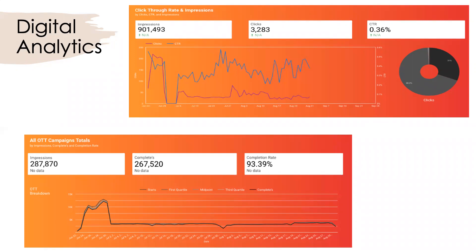With every digital campaign comes digital analytics — also called insights or dashboards. This is the information that shows your campaign results. At the top of this example are the impressions purchased, the clicks the campaign received, and the click-through rate. There are industry benchmarks — for this particular campaign the industry benchmark is 0.17%, so 36% is definitely strong. For OTT, there's no click-through rate since it's on your TV, so the completion rate is what matters — and since these ads are non-skippable, completion rates are usually in the high 90s.